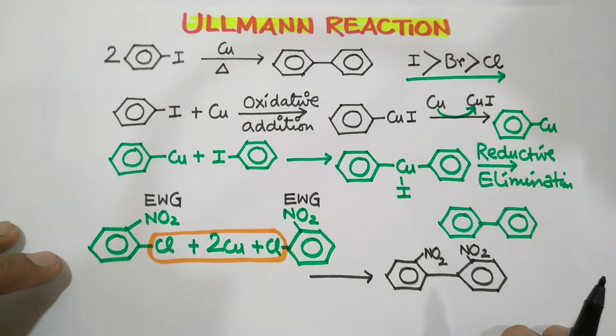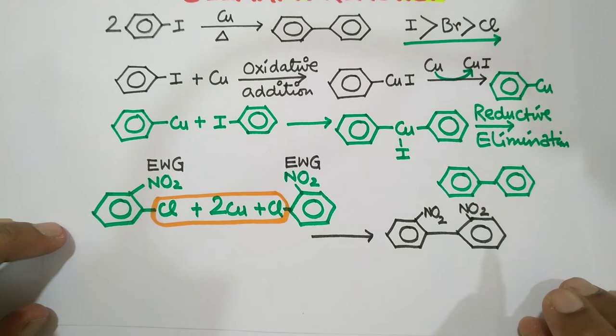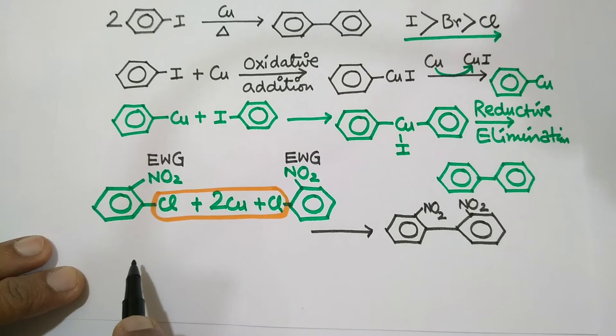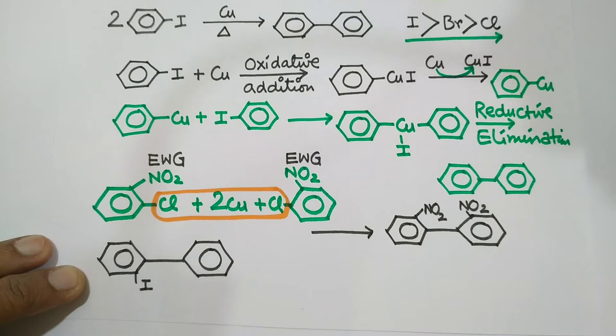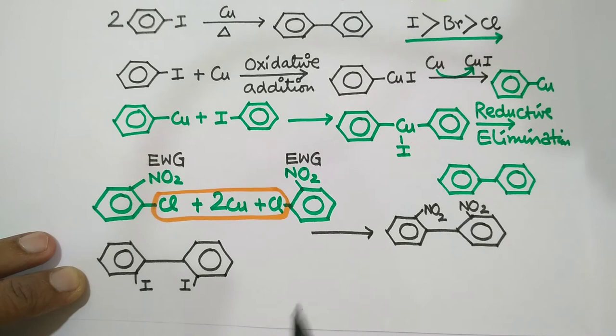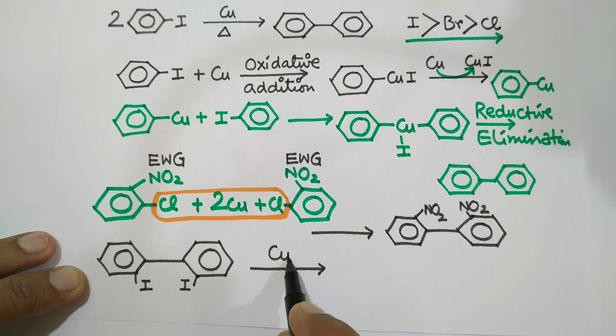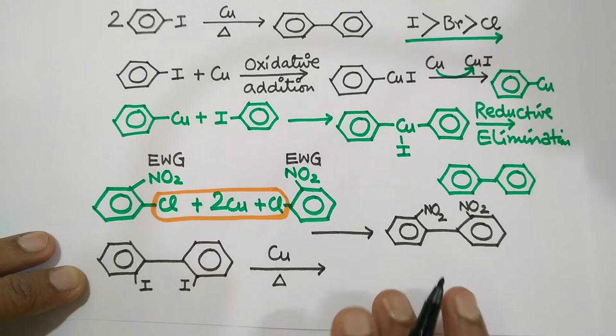And another type in this reaction is intramolecular type, intramolecular Ullmann, with two iodine attached in ortho position, and when this compound is heated then Ullmann ring closure by intramolecular Ullmann...